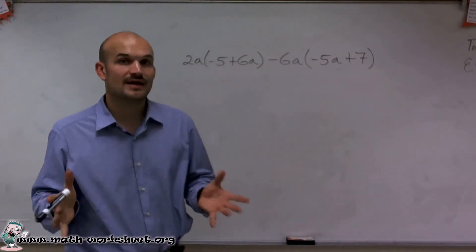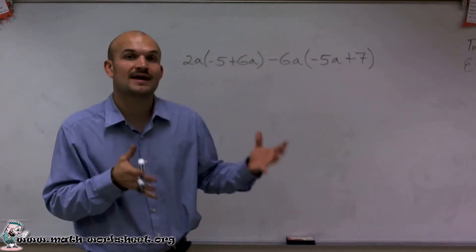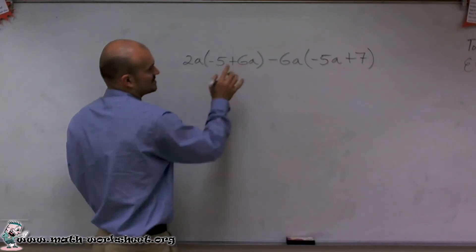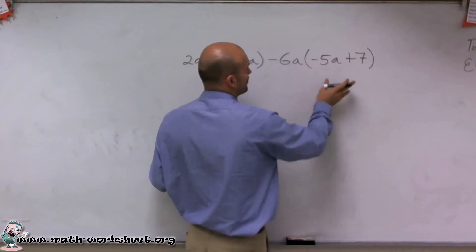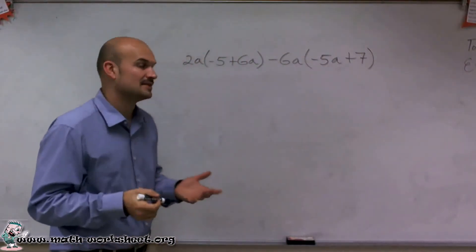Even before I do that, I want to make sure I can simplify inside my parentheses. Since negative 5 and 6a are not like terms, I cannot combine them. Negative 5a plus 7 are also not like terms, so I cannot combine those either.